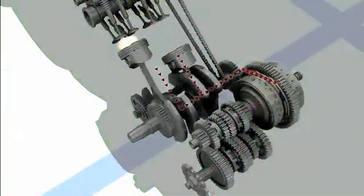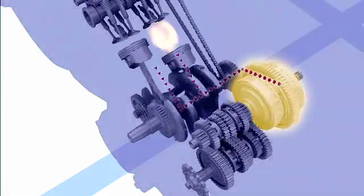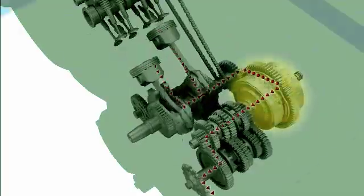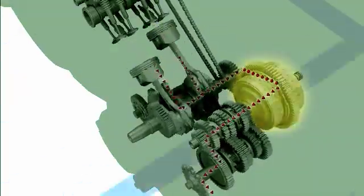The clutch transmits and disconnects the rotary motion to the transmission. It plays its role when starting or stopping the motorcycle or shifting gears.